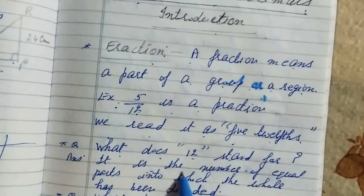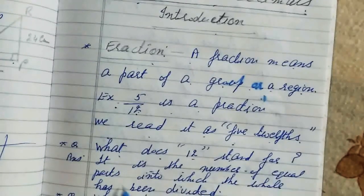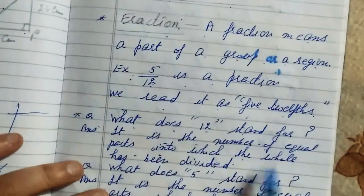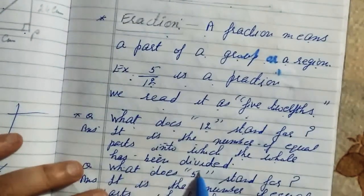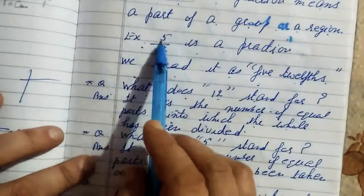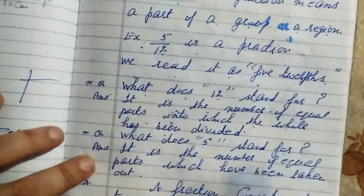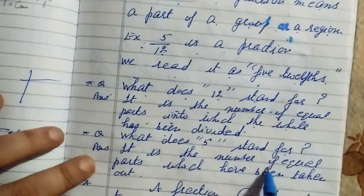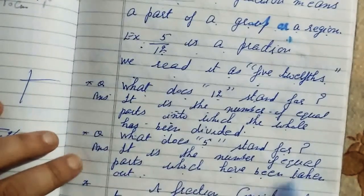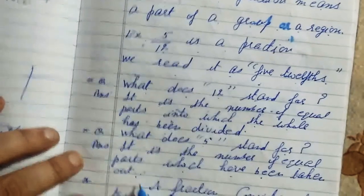It is the number of equal parts into which the whole has been divided. Next, what does five stand for? It is the number of equal parts which have been taken out.